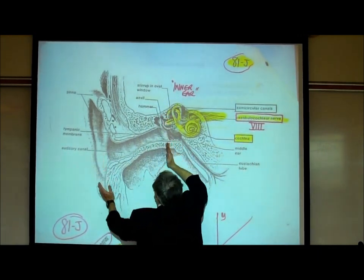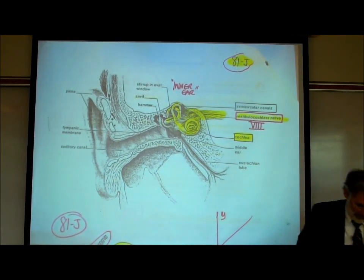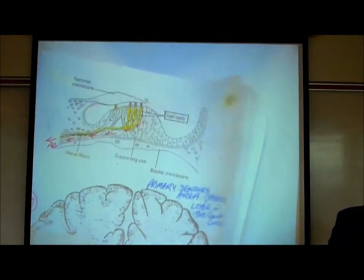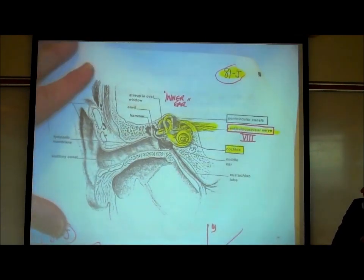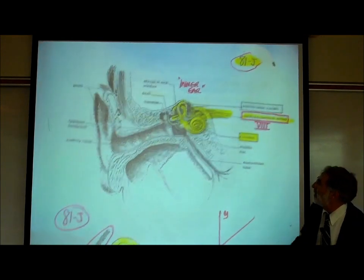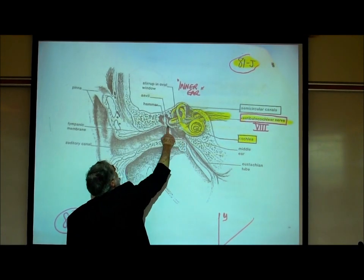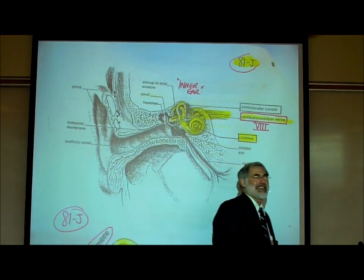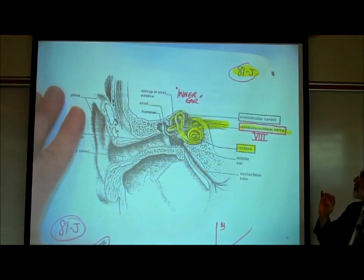This is called the outer ear. Now, this area right here is where you have three little bones, and you might have heard this in anatomy class. There are three little bones, or ossicles.